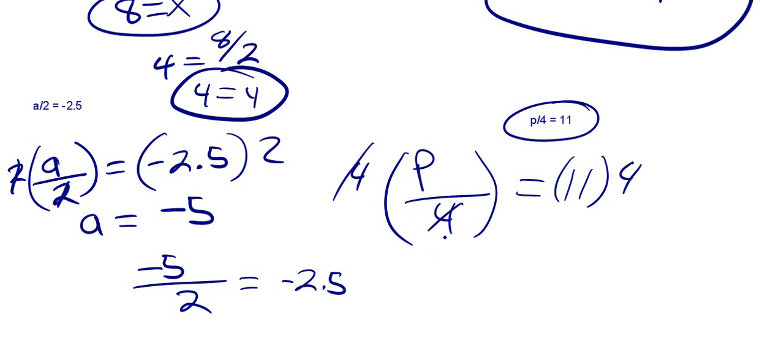And these numbers are actually being divided, right? 4 divided by 4 leaves us with 1p. 11 times 4 is 44. And that makes sense, because if you take 44 and you divide it by 4, you get 11.